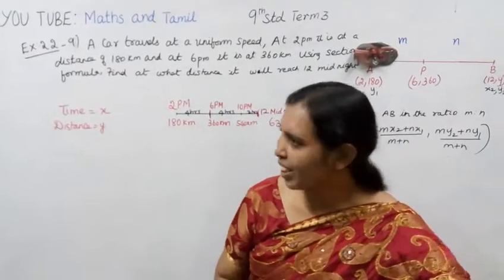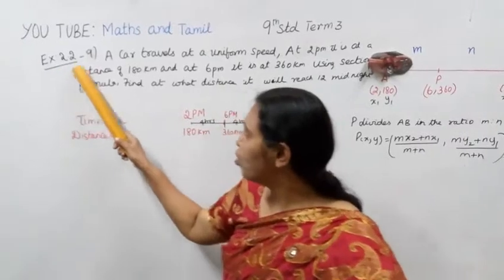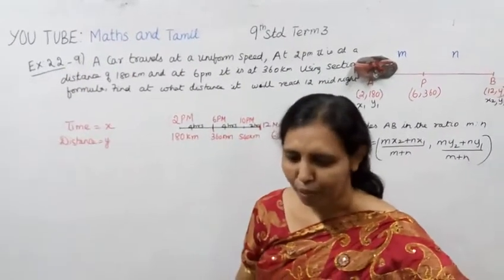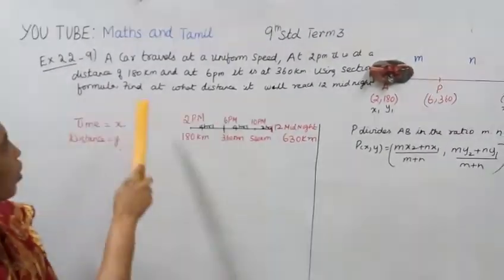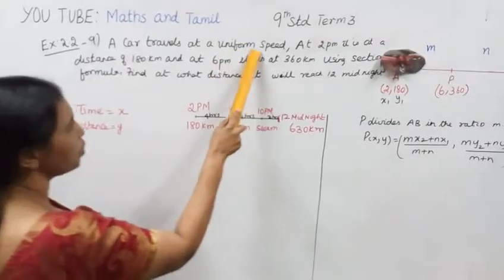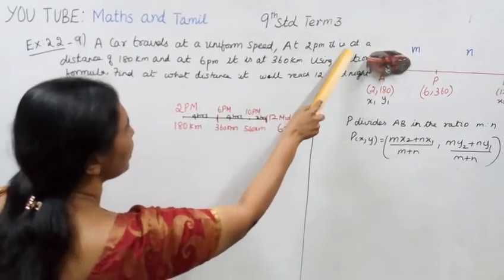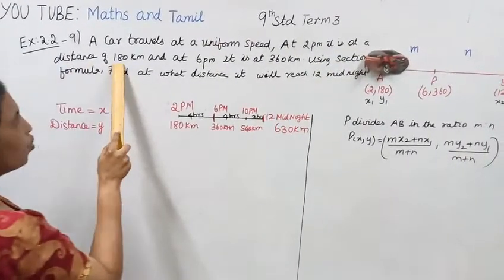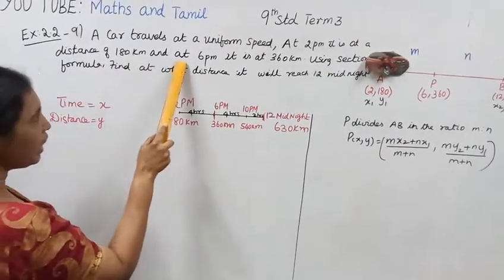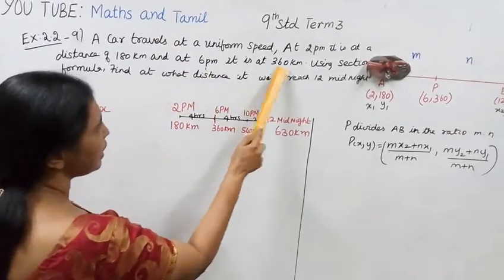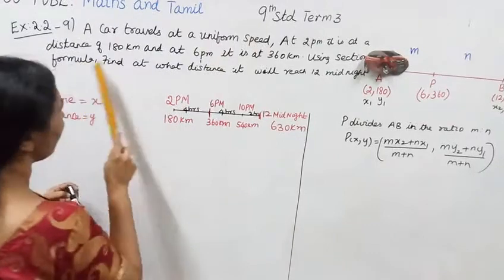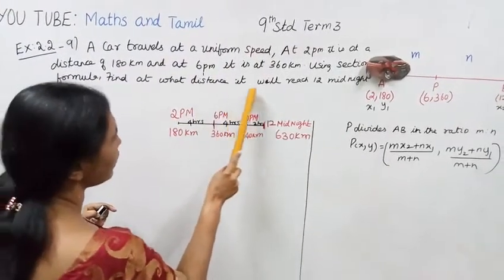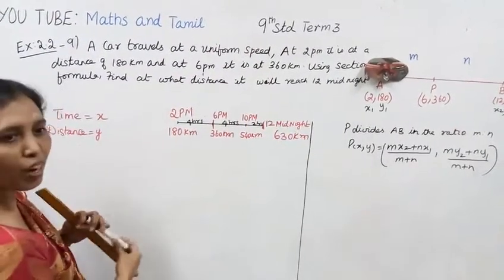Hello 9th standard students. This is a 5 marks question. A car travels at a uniform speed. At 2pm it is at a distance of 180 km, and at 6pm it is at 360 km. Using section formula, find at what distance it will reach 12 midnight.